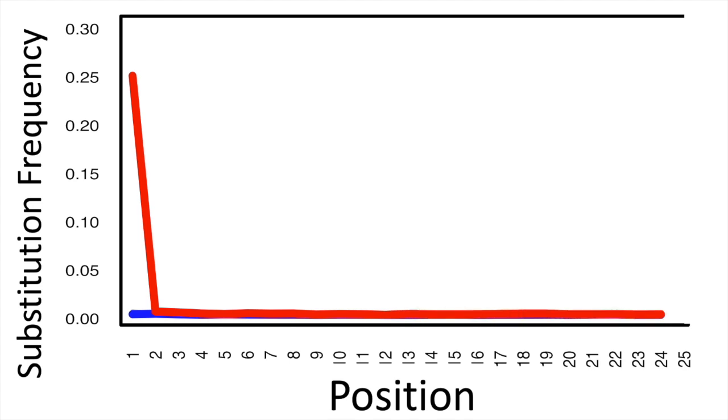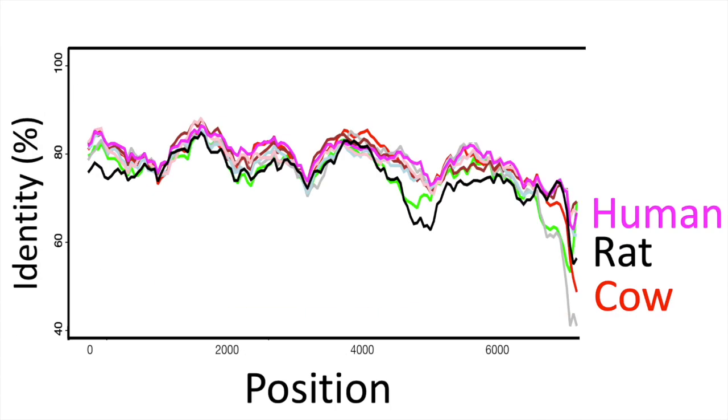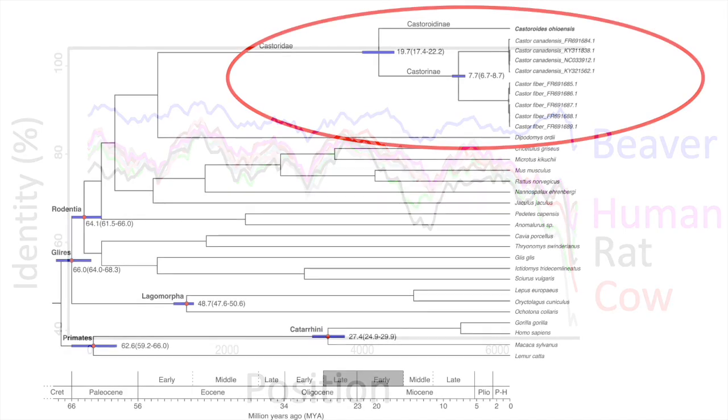Finally we compared against potential mammalian contaminants, such as lab rats, humans, or even burgers. Our 7,686 base pairs of DNA most closely resembled modern beaver, allowing us to be confident that we now had nearly half the mitochondrial genome of a giant beaver.